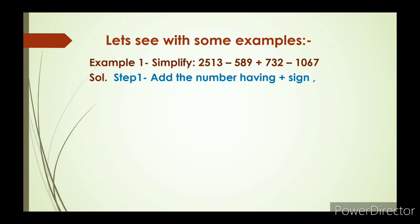Now solve. We do Step 1 first: add the numbers having a plus sign before them. From the question, the numbers with a plus sign are 2513 and 732. After adding these two, we get 3245.